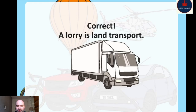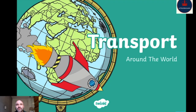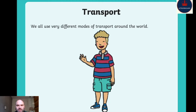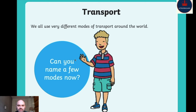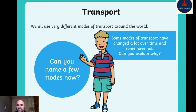So a car travels on land and a boat travels by water — some of you might have forgotten that, and it might be new for some of you too. This is transport around the world. We all use very different modes of transport around the world. A mode of transportation is a type of transportation — like traveling by bike, horse, spaceship, or even a dog sled. Some modes of transport have changed a lot over time, and some have not.